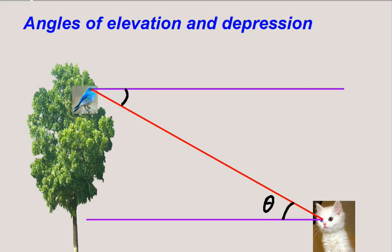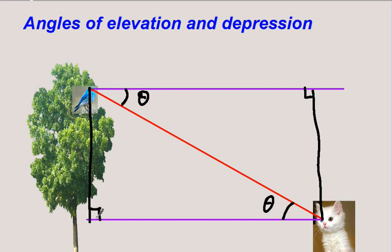The angles of elevation and depression are equal because they are corresponding angles. To find the right angle triangle, you continue the triangle either way — you have a right angle triangle, and you can then apply the appropriate trigonometric ratios to find the unknown.